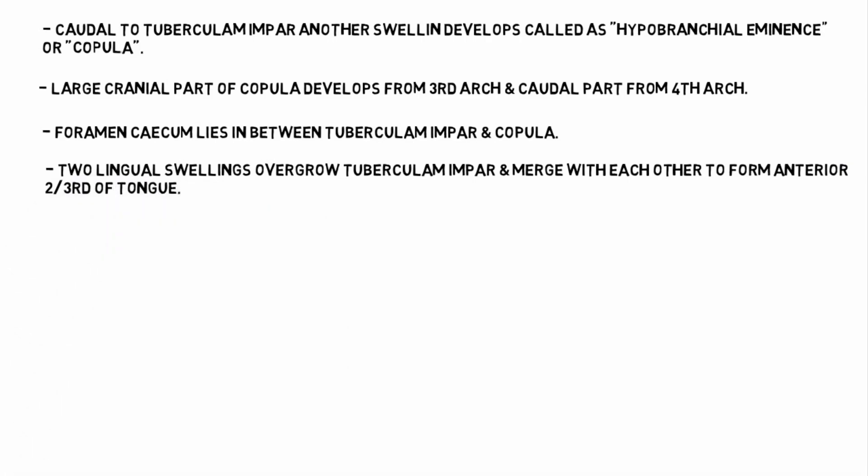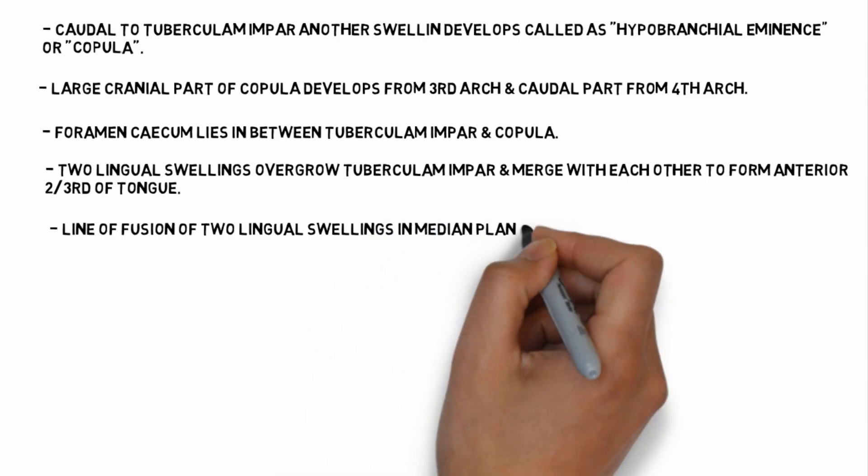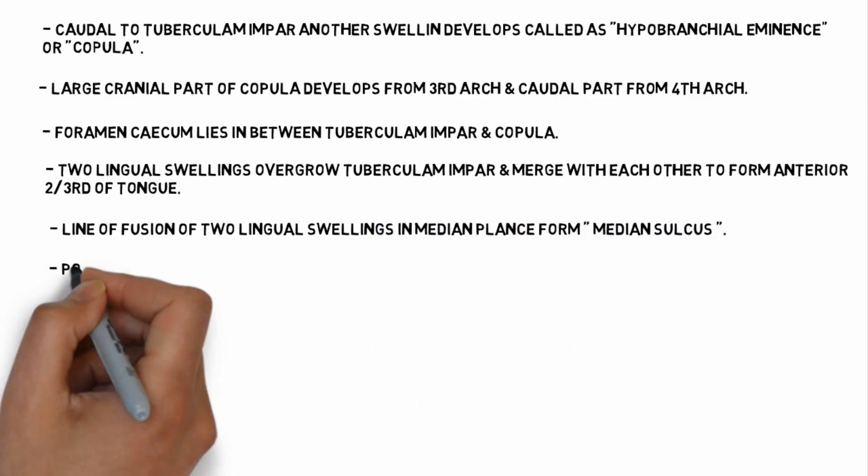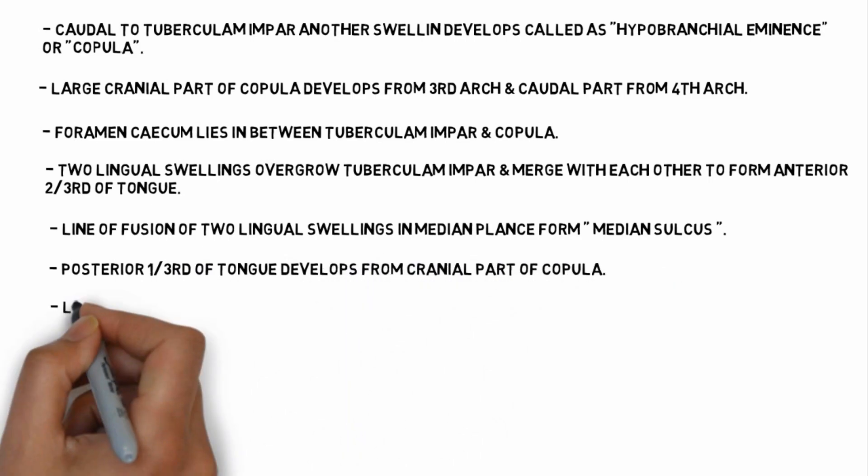Two lingual swelling overgrow tuberculum impar and merge with each other to form anterior two-third of tongue. The line of fusion of two lingual swelling in medial line form median sulcus.